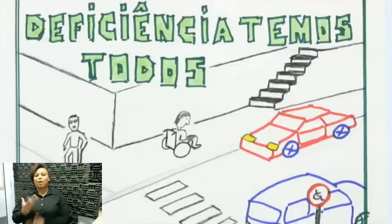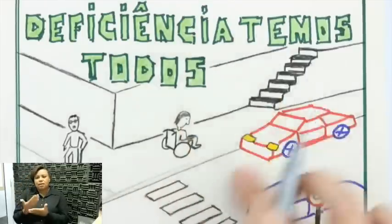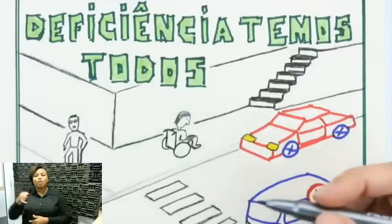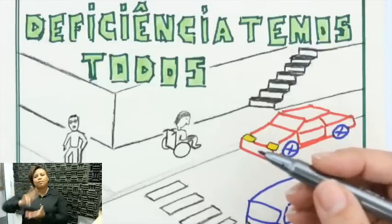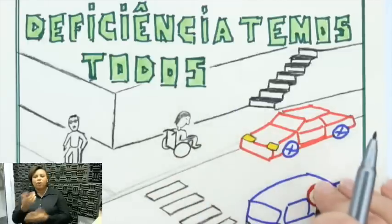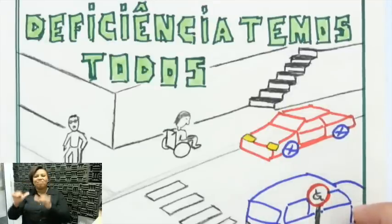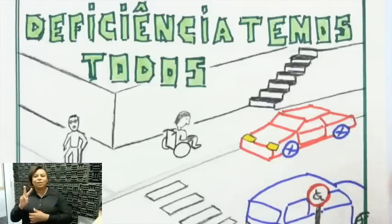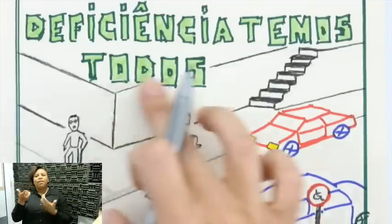Essa aula vai ter algumas novidades: vou tentar audiodescrever as imagens que estão aparecendo na tela. Vocês também vão ter a novidade da Juliana, nossa tradutora de Libras, que vocês vão enxergar à esquerda dos nossos quadros. Ela vai estar traduzindo essa aula para vocês.